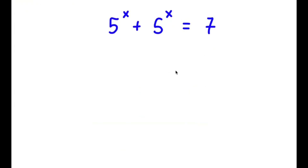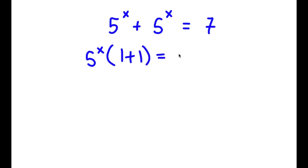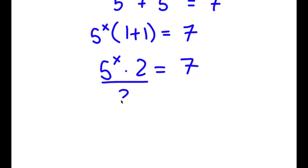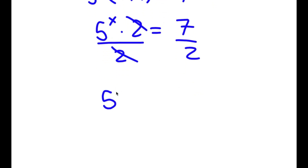In this problem I have 5 to the power of x plus 5 to the power of x is equal to 7. I'll first factor out 5 to the power of x: 5 to the power of x times (1 plus 1) is equal to 7. Since 1 plus 1 is 2, I have 5 to the power of x times 2 is equal to 7. Dividing both sides by 2, these cancel out and I get 5 to the power of x is equal to 7 over 2.